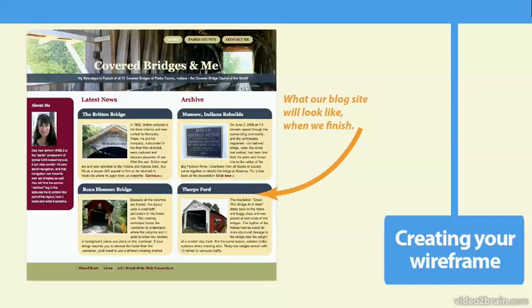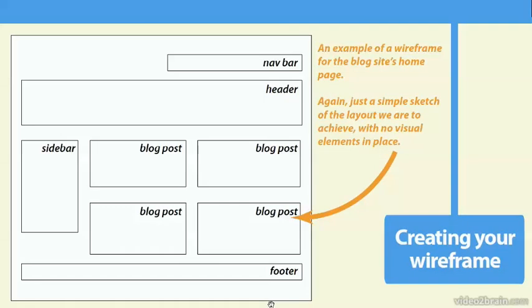This is an example of the site we're going to be creating — the blog site. This is what the finished project is going to look like. You can see we have four separate blog posts here. This is going to be our aside tag, which gives us that little sidebar. We have a simple navigation up here, then the banner graphic at the top, and a footer at the bottom. So there's the nav bar, the header graphic, the sidebar, the four blog posts, and the footer.